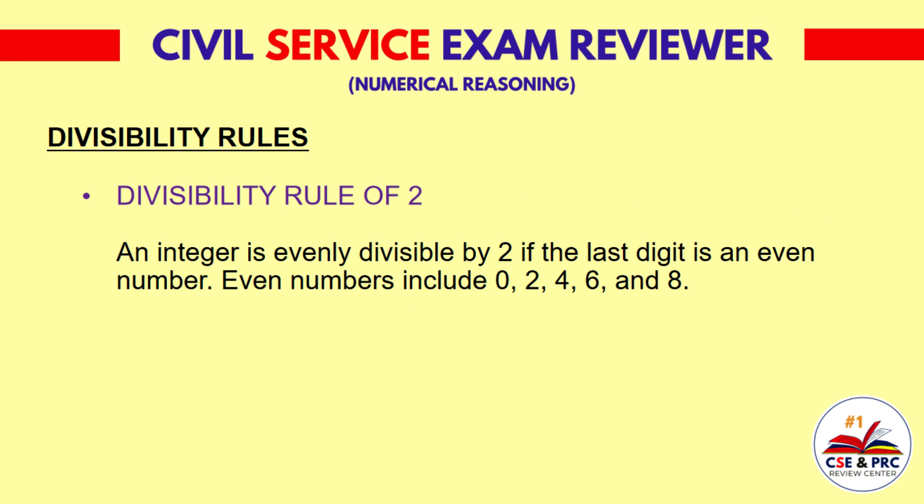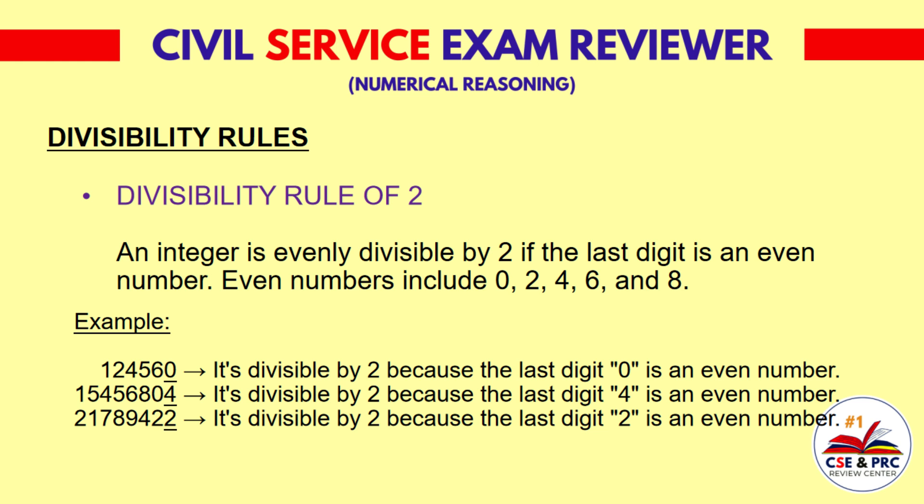Divisibility Rule of 2: An integer is evenly divisible by 2 if the last digit is an even number. Even numbers include 0, 2, 4, 6, and 8. For example, the figure 124,560 is divisible by 2 because the last digit 0 is an even number.